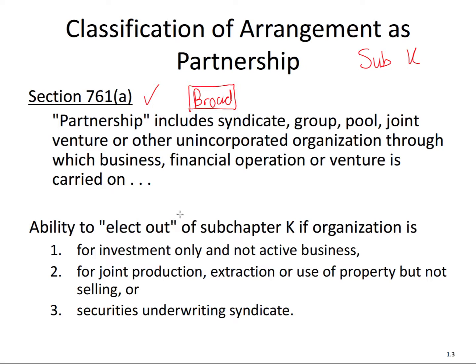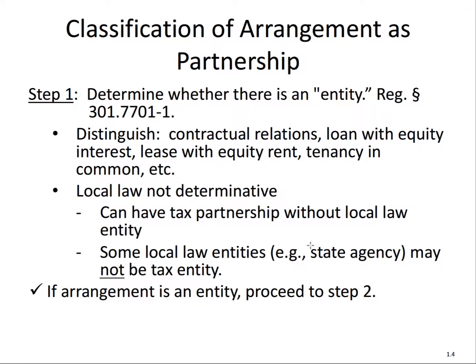It's possible to elect out of the partnership taxation rules of Subchapter K if it's an investment-only business, joint production, or a security underwriting syndicate. The specifics are beyond the scope of this video, but I want to bring that to your attention. Now it's important that we go through a four-step process. There are going to be four steps to classify an arrangement as a partnership.